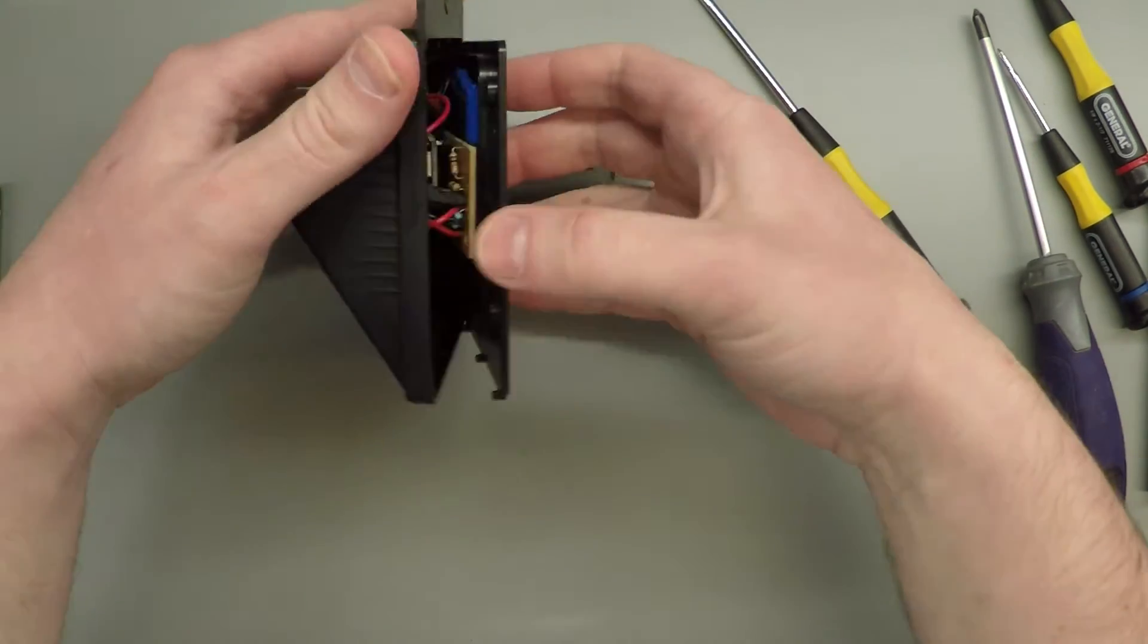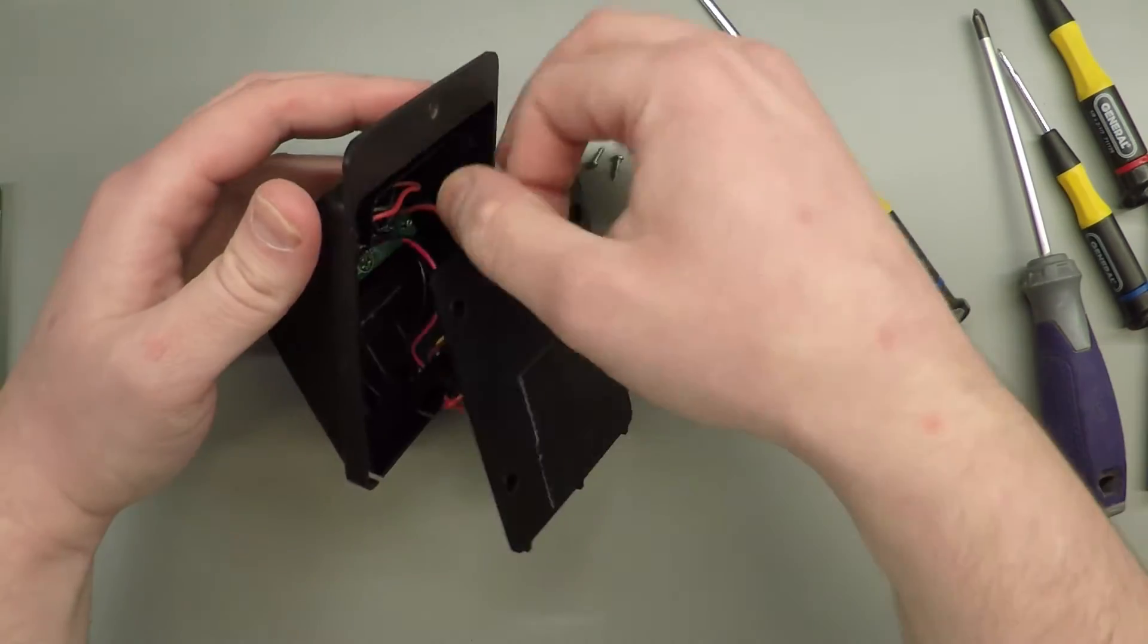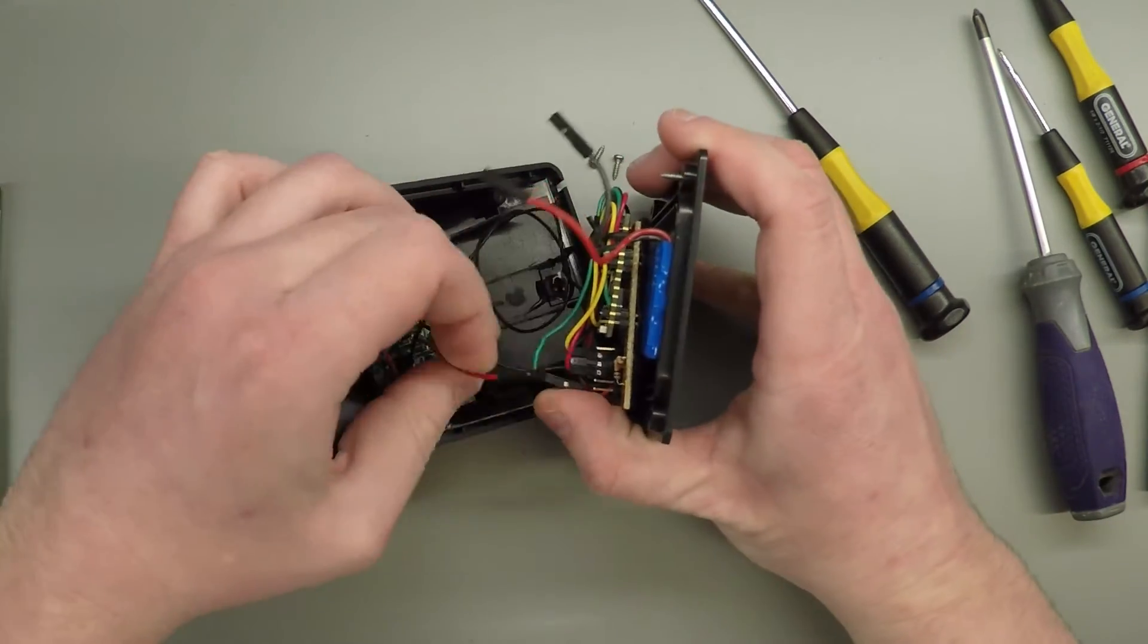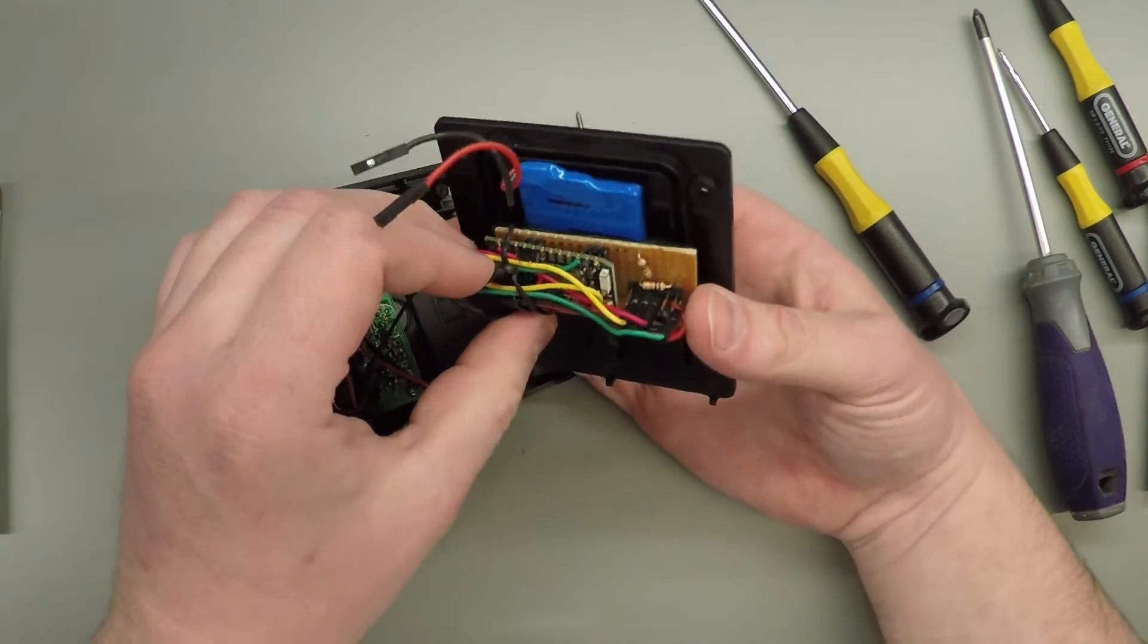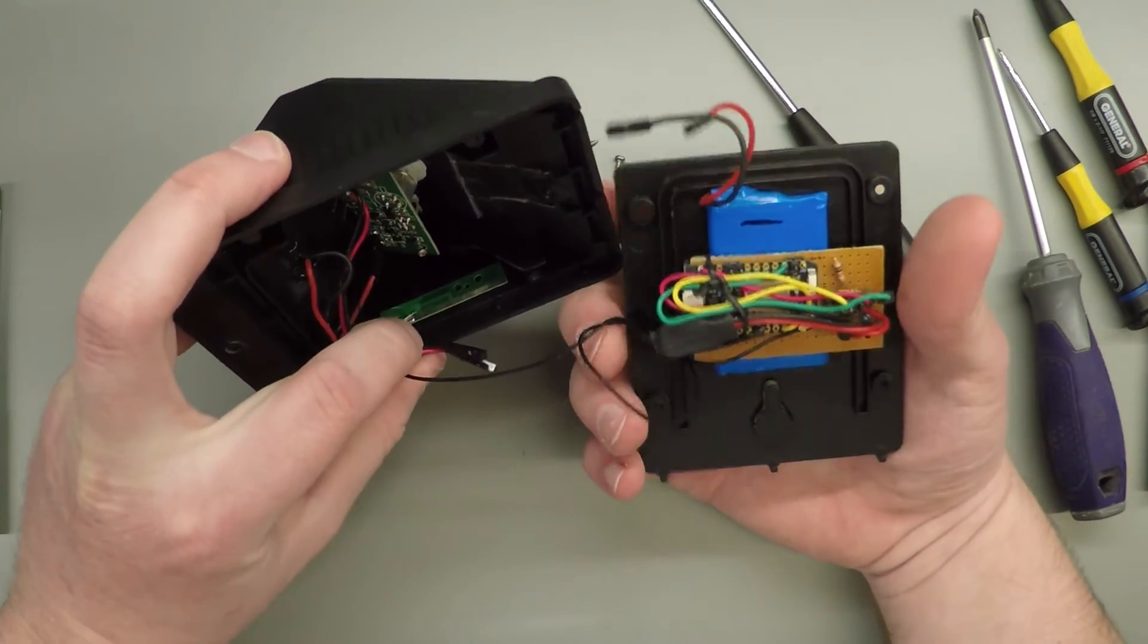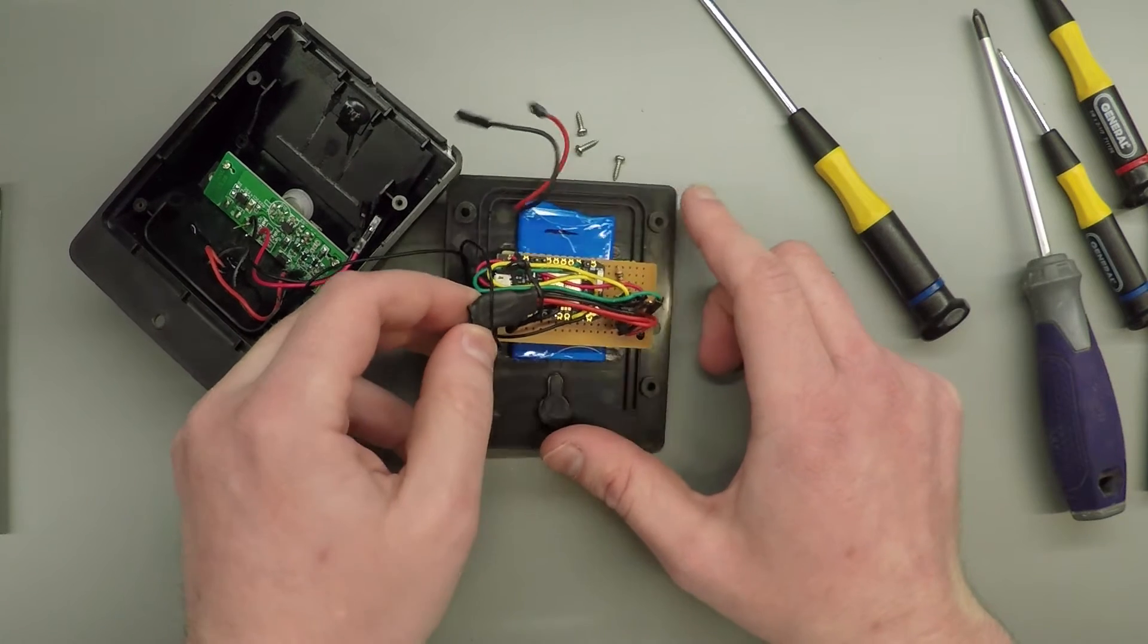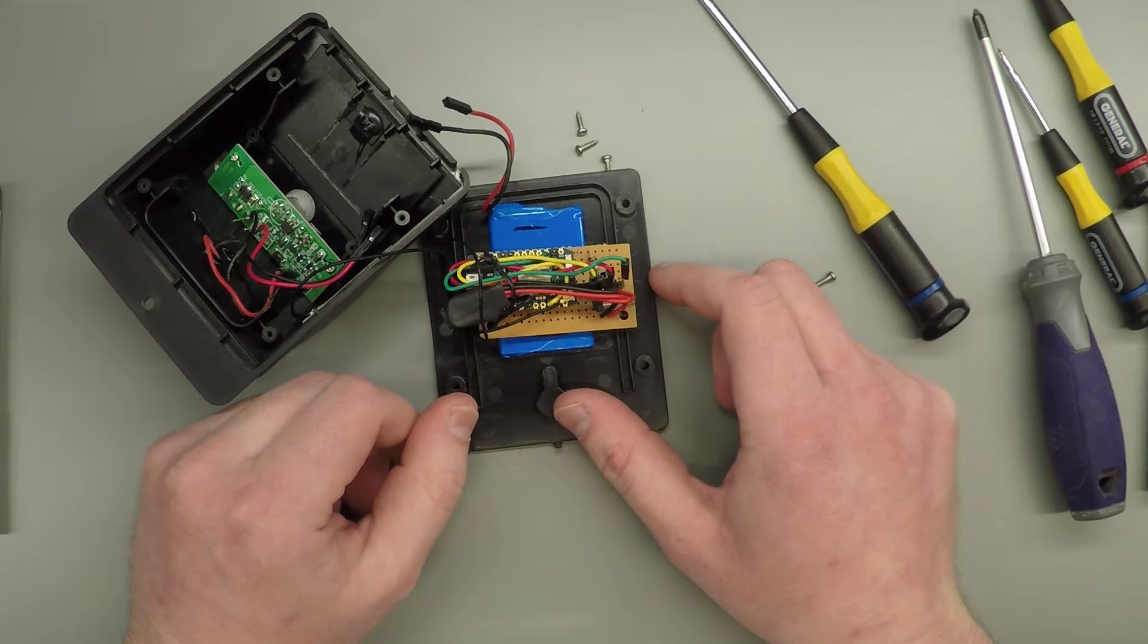And here are the contents. Let's see, what can I unplug in here... battery, power. So here is the Particle Photon. I have the antenna glued to the side of the enclosure, and over here inside the shrink tubing I have a little voltage regulator.